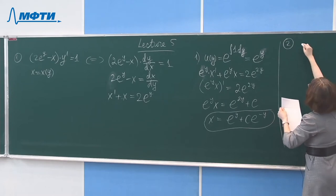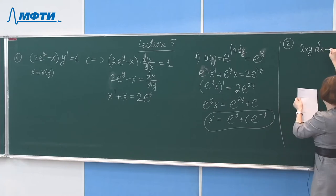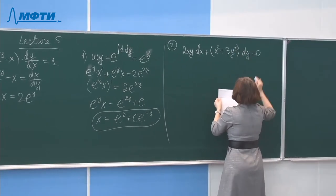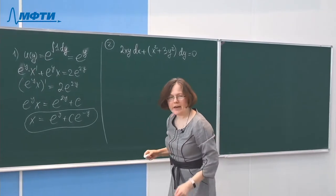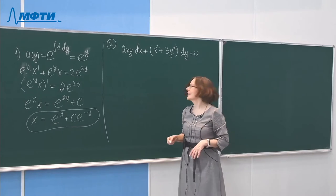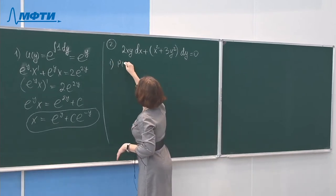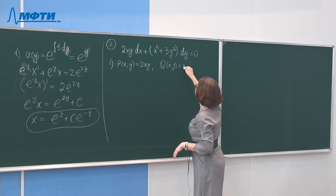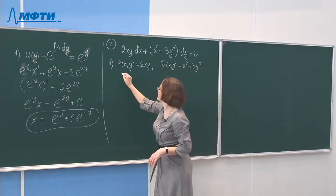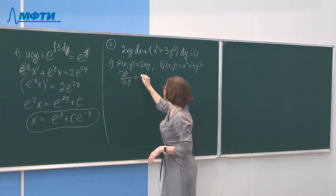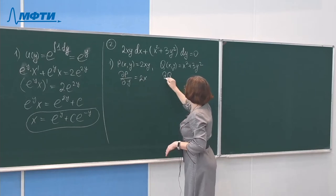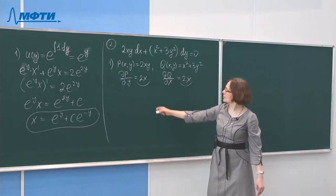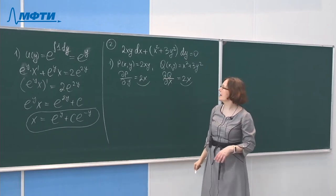Task number two: solve the differential equation. It is an exact equation. P(x,y) equals 2xy and Q equals x² plus 3y². We verify exactness: dP/dy equals 2x, and dQ/dx equals 2x — since these partial derivatives are equal, the equation is exact.